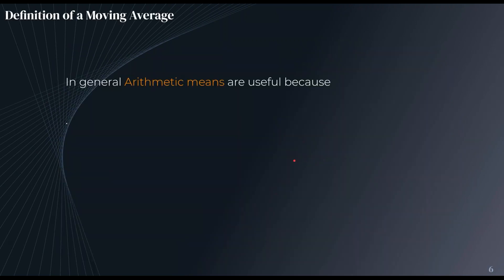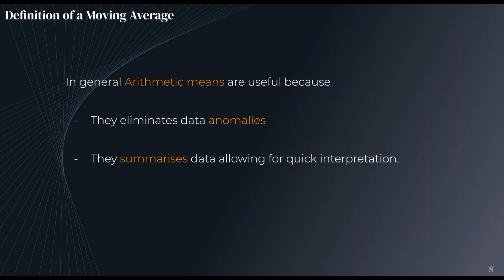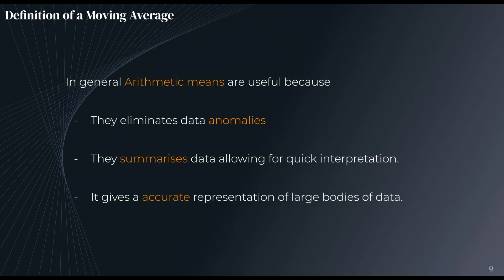In general, arithmetic means are useful for a few reasons. What they do is eliminate data anomalies — if there's any data which is really far away from the mean, it's going to matter less because an arithmetic mean combines a whole bunch of numbers. Next, it summarizes the data, letting you interpret it really quickly so you can instantly look at a chart and know what the trend is. That is invaluable, especially on lower timeframes. Finally, it gives a really accurate representation of large bodies of data — by getting the mean from a simple moving average, we can very quickly gain data over 200 candles.